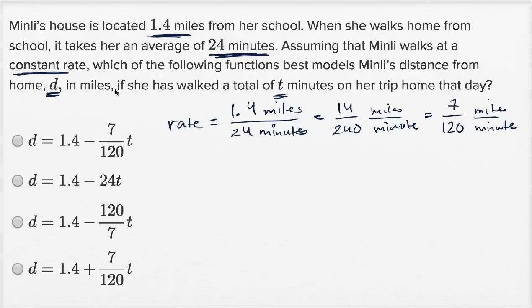Now we need to figure out D. We have to be very careful. D is Minley's distance from home. She's leaving from school and it's her distance from home. Remember, her home is 1.4 miles from her school.